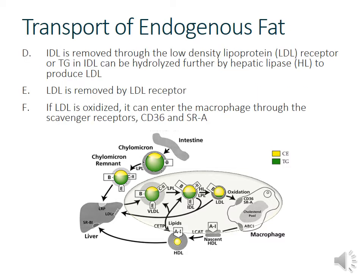Once IDL is processed through the LDL receptor, it can be removed. The LDL receptor is critically important for our drug therapy — our main goal is to increase the number of LDL receptors. Eventually with low enough triglyceride content, you end up with LDL particles, which are mainly our cholesterol of concern because they lead to atherogenesis — plaque formation and cardiovascular disease. When LDL gets oxidized and taken up by macrophages, it causes oxidative damage and deposition within endothelial cells.